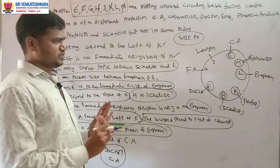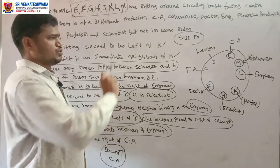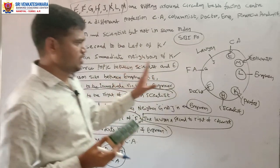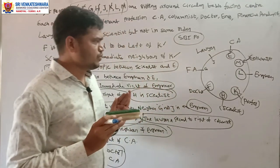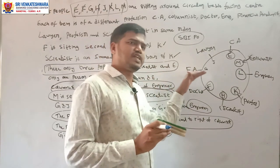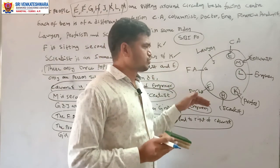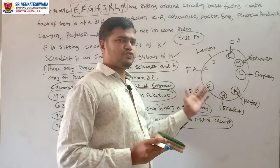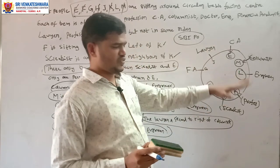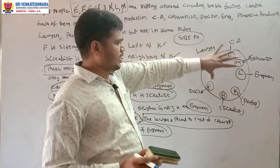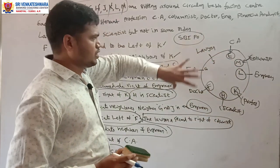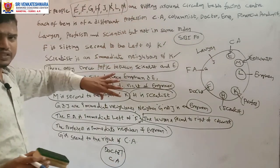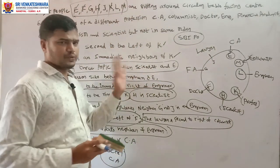Once you sequence all the information in order, the entire conclusion for the circular arrangement is derived. The key is understanding toward-the-center orientation: which side is left and which is right. Once you have the full conclusion, whatever questions they ask, you can answer them easily. Thank you.